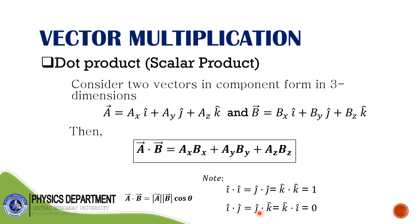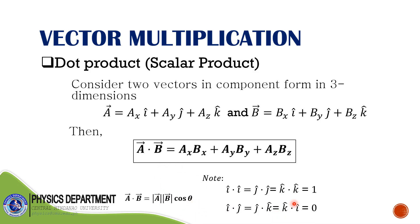And î · ĵ = ĵ · k̂ = k̂ · î = 0, since î and ĵ are perpendicular to each other with an angle of 90° between them, and cosine 90° equals zero. Therefore, the dot product of any two perpendicular unit vectors is zero.